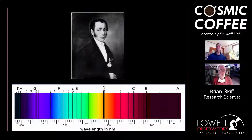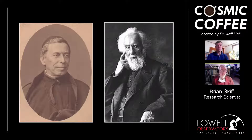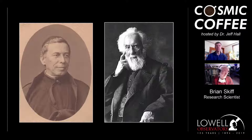Once Kirchhoff and Bunsen had shown from a laboratory perspective that spectroscopy was truly diagnostic and we could find out about the temperatures and composition of stars, almost immediately Angelo Secchi — a Jesuit priest — and Huggins in England started observing stars visually with spectroscopes. In the case of Secchi, he ended up looking at about 4,000 stars, and with a big sample like that you can start classifying them into bins.